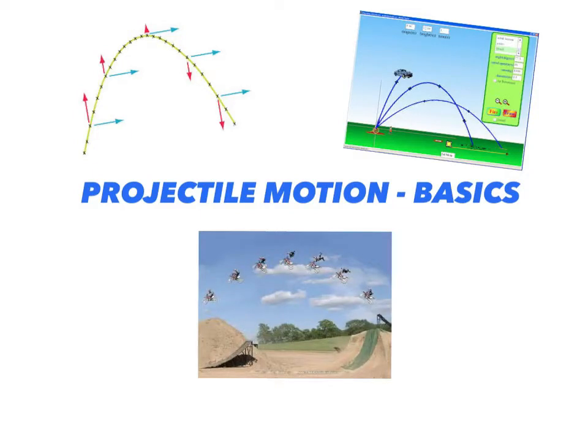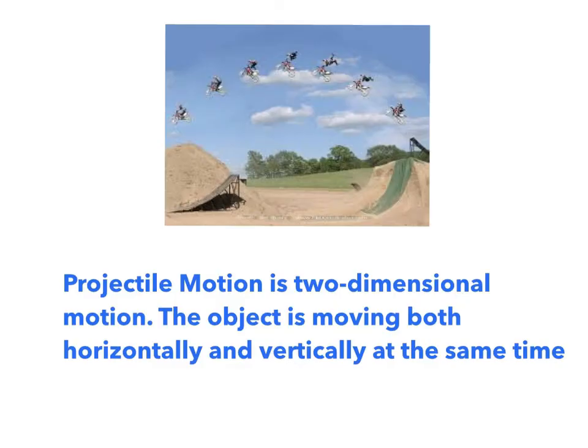What we would like to do in this video is review the basics of projectile motion that we've learned in class, and then apply this to doing problems with projectile motion. First of all, we learned that projectile motion is really two-dimensional motion. Objects that are exhibiting projectile motion are moving both horizontally and vertically at the same time — for example, the motorcyclist is both going up and moving horizontally, exhibiting projectile motion.